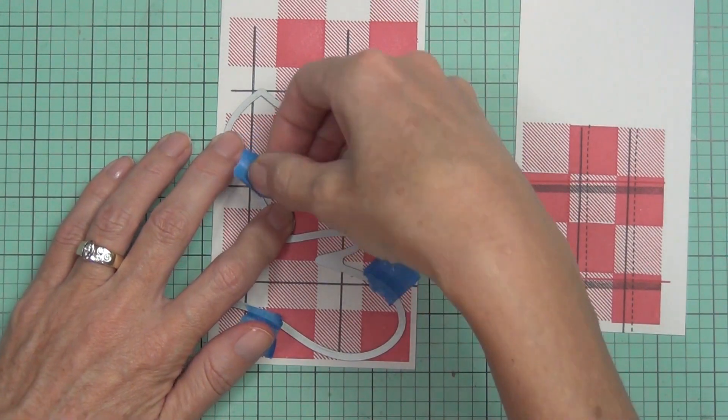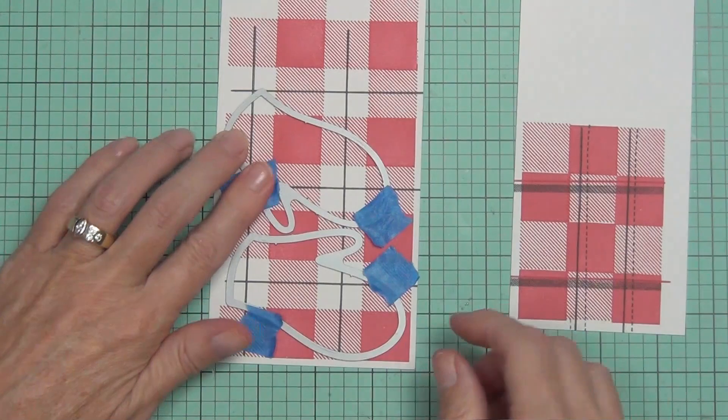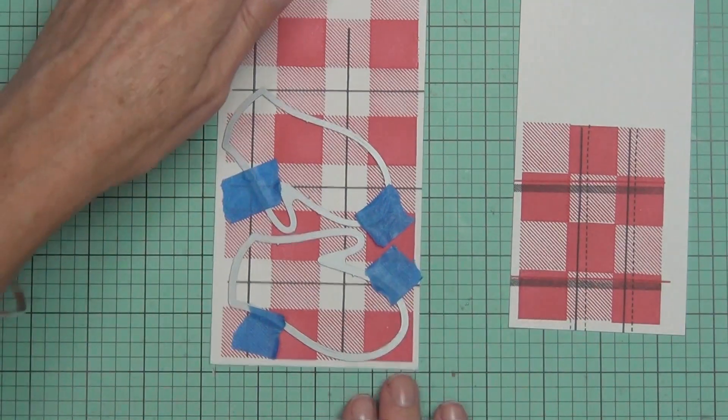Now I'm just going to run these dies—the mitten dies—through my die cutting machine, and I actually get an extra mitten out of the panel that I stamped.